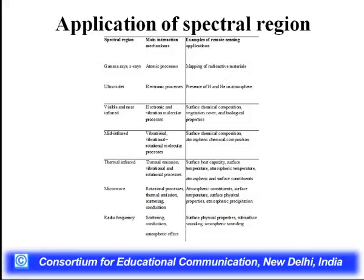Different spectral regions have important applications. Ultraviolet is particularly for electronic processes, but the most important range is visible and near-infrared where we can study surface chemical composition, vegetation cover, and biological properties. Mid-infrared is important for surface chemical composition. Thermal infrared is used for surface heat capacity and is particularly useful for studying urban heat islands. Microwave is very important for atmospheric constituents, surface temperature, surface physical properties, and atmospheric precipitation.